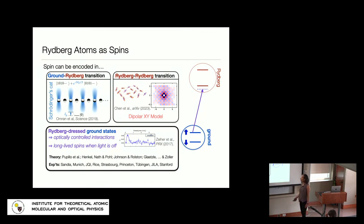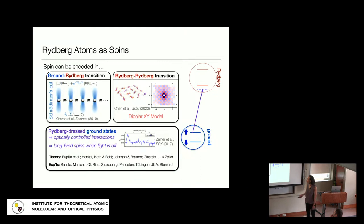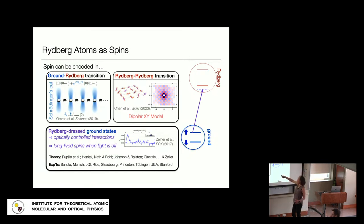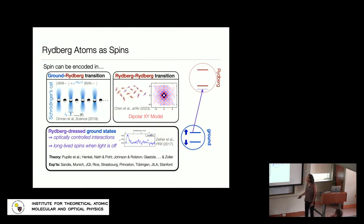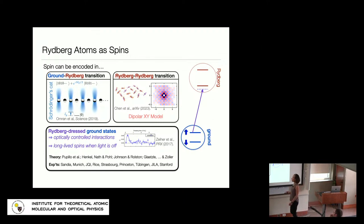We've heard at this conference about different ways of mapping and encoding an interacting spin system in Rydberg atoms. Your two spin states might be the ground state and the Rydberg state, or a Rydberg s-state and a p-state to give dipolar interactions. In our case, we're thinking about spins encoded in the ground states and using light to optically induce interactions by admixing a bit of Rydberg character through off-resonant coupling to a Rydberg state. This method is called Rydberg dressing.